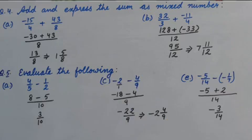Part e: Minus 5 upon 14 minus minus 1 upon 7. First of all, we will take out LCM of 14 and 7. That is 14. Then numerators will be minus 5. Yes, here we are multiplying minus and minus. So, it will be plus. And numerator you know how to find. That is 2. Answer is minus 3 upon 14.